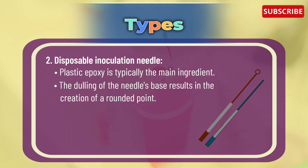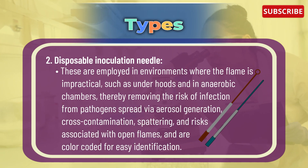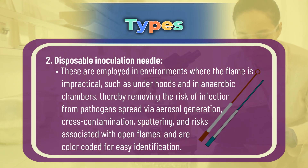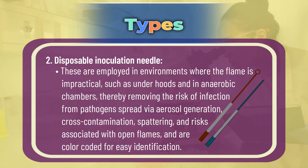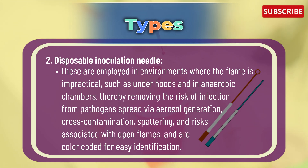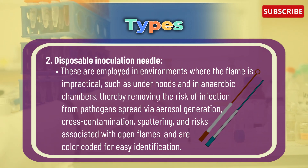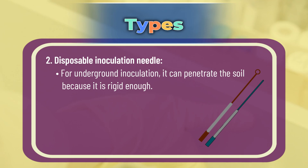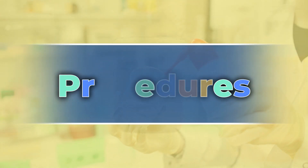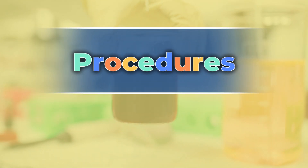The dulling of a needle's base results in the creation of a rounded point. These are employed in environments where a flame is impractical, such as under hoods or in anaerobic chambers, thereby removing the risk of infection from pathogens spread with aerosol generation, cross-contamination, splattering, and risks associated with open flames. They are color-coded for easy identification. For underground inoculation, the needle can penetrate soil because it is rigid enough.